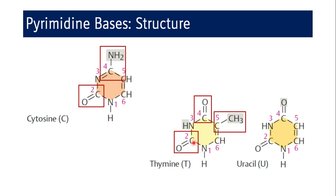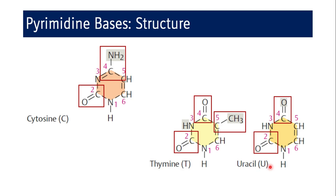For thymine, three groups are attached: one oxy group at the second carbon, one oxy group at the fourth carbon, and one methyl group at the fifth carbon atom. The name of thymine is 2,4-dioxy-5-methylpyrimidine. For uracil, if we remove the methyl group from thymine, we get uracil. So 2,4-dioxypyrimidine is the name for uracil.